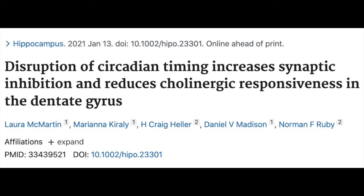Homeostasis is like a thermostat — it corrects an imbalance. Circadian rhythms are different: they don't correct something that's gone wrong, they anticipate problems before they happen. It's going to be night, you're going to need to sleep, so the clock starts to prepare your brain to quiet down. They're self-sustaining oscillations synchronized to the world around us. Biological clocks are never exactly 24 hours — if left alone in a cave, they range from 23 to 25 hours, and the daily light-dark cycle resets them each day.